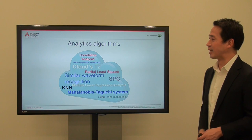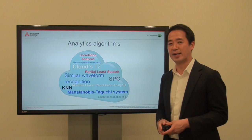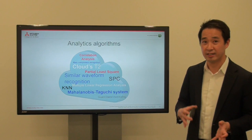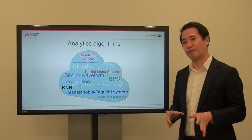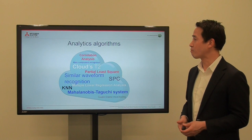Then you would select the analytics algorithm necessary. This is where you should involve somebody who is good at statistics, because the method you select — and there are various methods — will depend on the kind of data, the type of data, and the variance of data you have. If you're collecting waveform data, then it makes sense to use waveform recognition methods. Other methods depend on whether it's fluctuating data or many different data types.